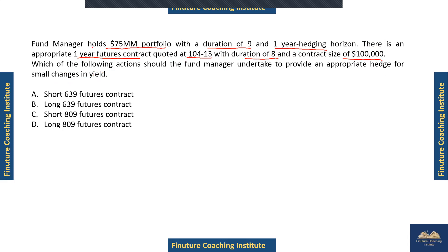First of all, given we are long on the bond portfolio, there would be an opposite direction on the hedging instrument — the futures instrument. So the eligible answers for this solution are A and C. We'll see how many contracts. There are two aspects to it. First, I'll give you the concept of hedging.